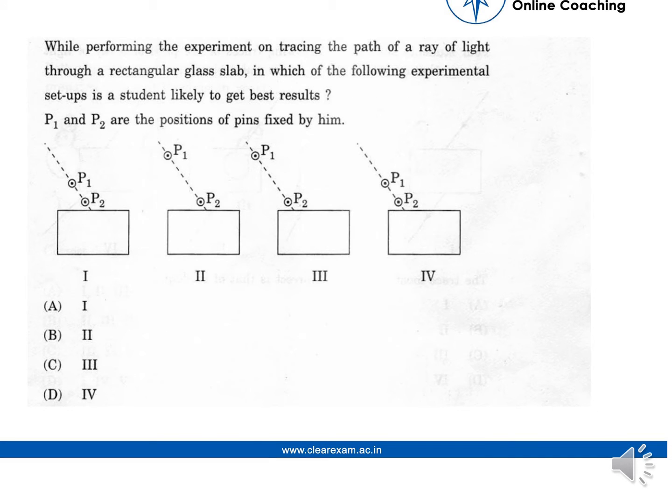While performing the experiment on tracing the path of a ray of light through a rectangular glass slab, in which of the following experimental setups is a student likely to get best results?